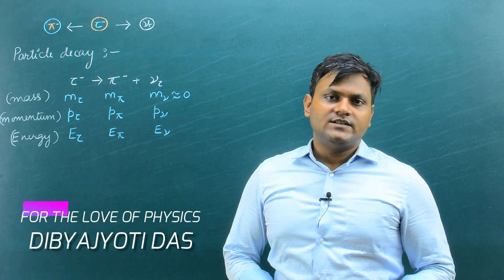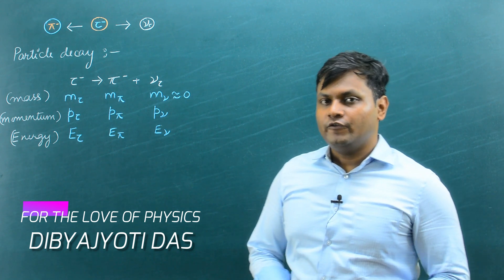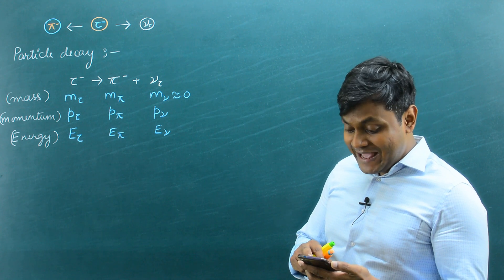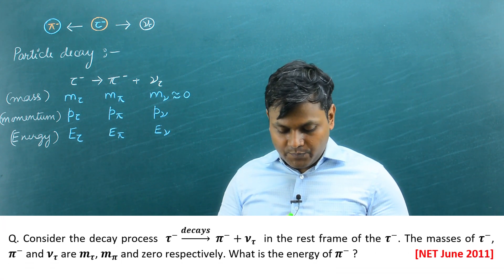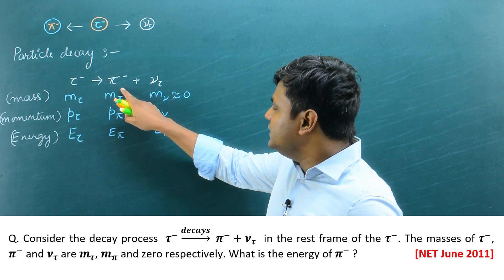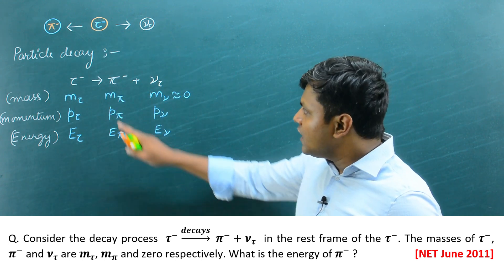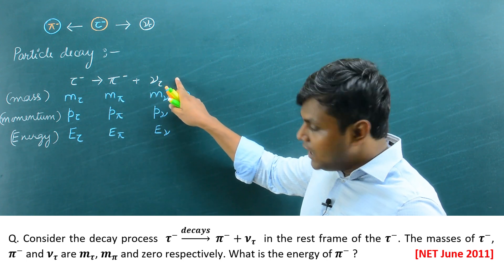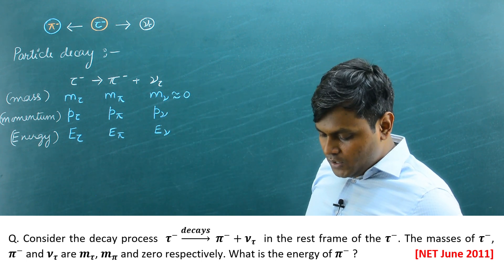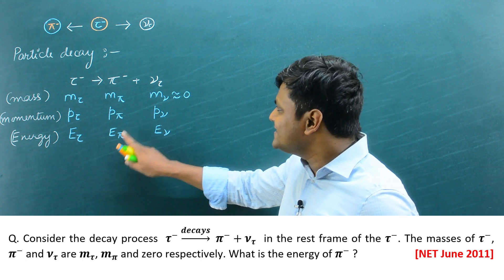Hi, I am Devijyotidas and this is 'For the Love of Physics.' Today we are going to discuss a problem of relativity which involves particle decay. This is a question from the NET Physical Sciences examination: consider a decay process where a tau particle decays into a pi meson and a neutrino in the rest frame of the tau particle. The masses are given by m_tau, m_pi, and m_neutrino, where m_neutrino is approximately zero. What is the energy of the pion in terms of the masses of the other particles?